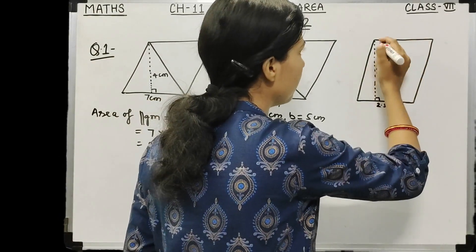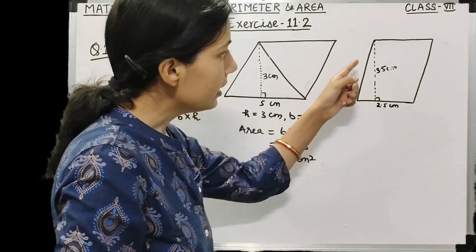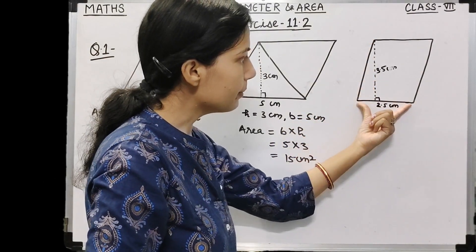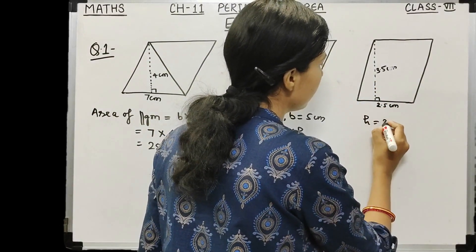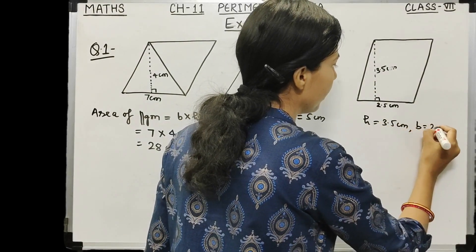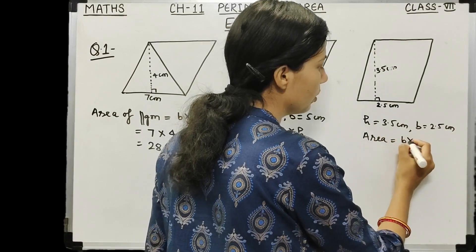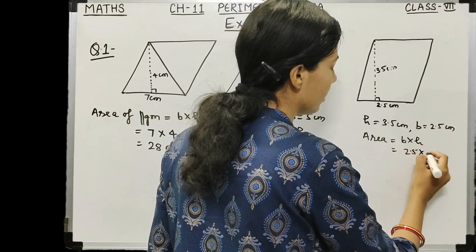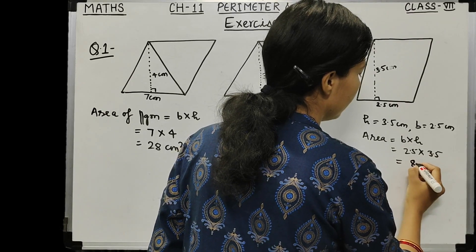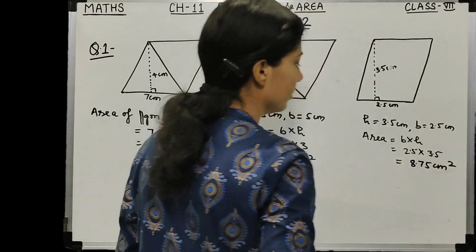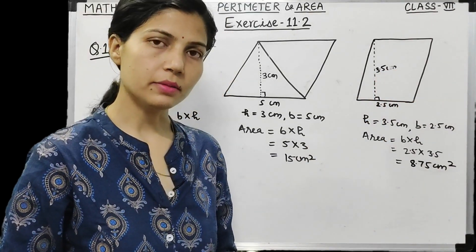For the third parallelogram, again you identify the opposite side from the vertex. The perpendicular drop gives the height. Height is 3.5 cm and base is 2.5 cm. Area = base × height = 2.5 × 3.5 = 8.75 cm². That is the area of this parallelogram.